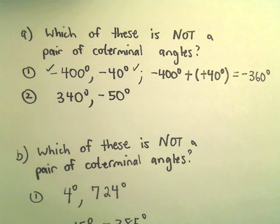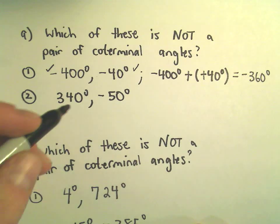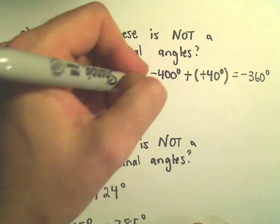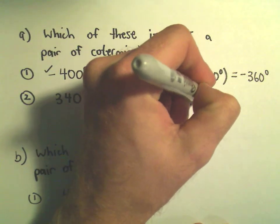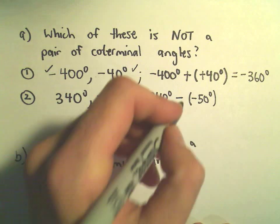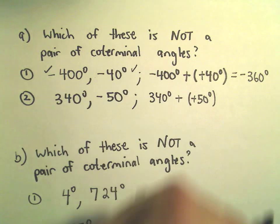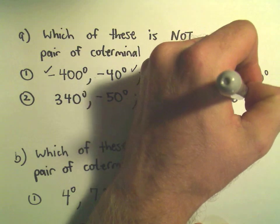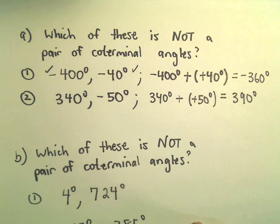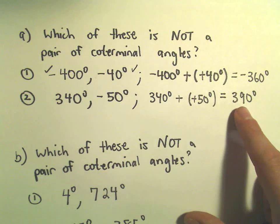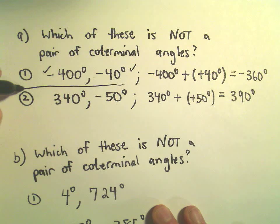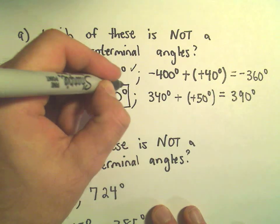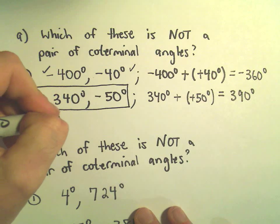We're trying to find the ones that are not coterminal, so let's check the other ones. If we do 340 degrees minus negative 50 degrees, that's going to make 340 plus 50, which is 390 degrees. Well, that is not a multiple of 360, so I would say this second pair of angles are not coterminal.